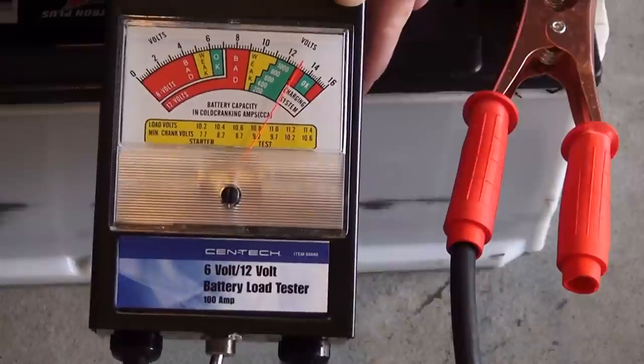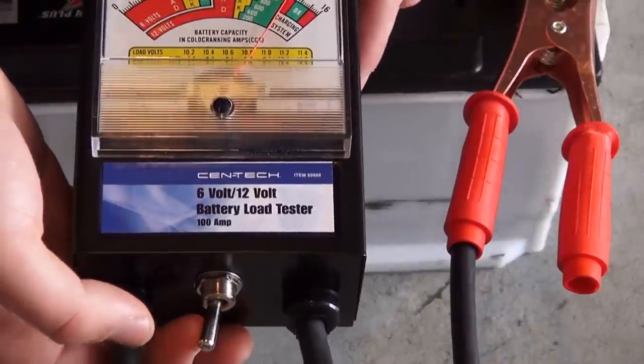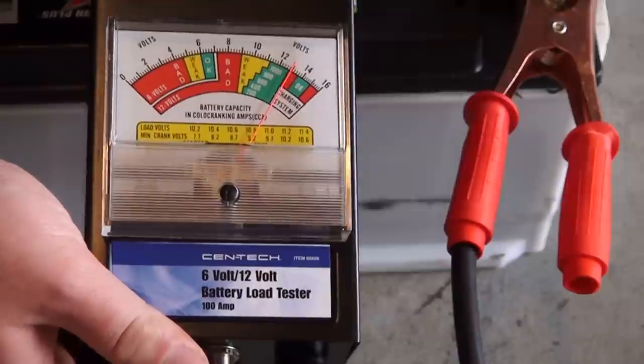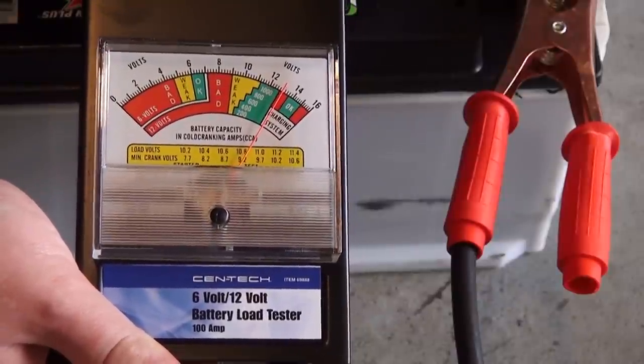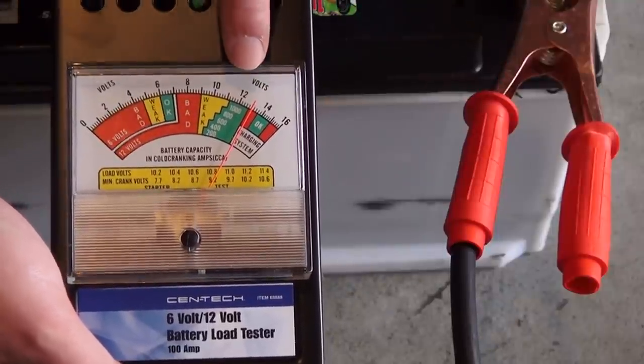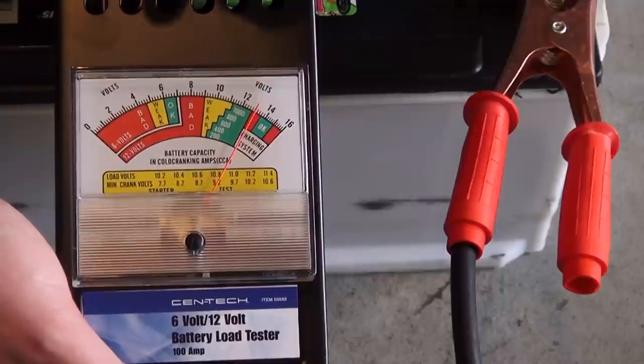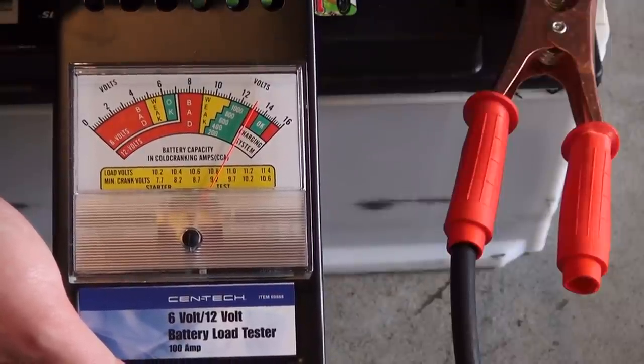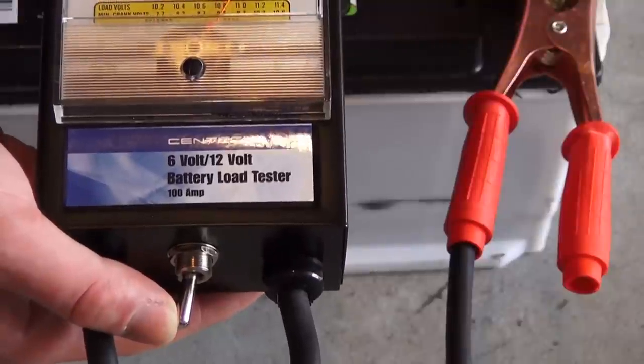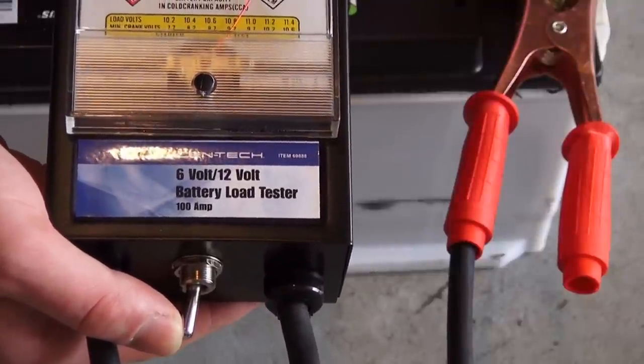But on the bottom of the unit we have this switch here. This will apply the load and it will tell us exactly where our battery stands under load, because that's really what matters. You can have a car battery that's registering perfectly high, but when a load is applied it drains immediately. So that's really important. So let's go ahead and flick this switch here on the bottom. And you're only supposed to do for 10 seconds or more.